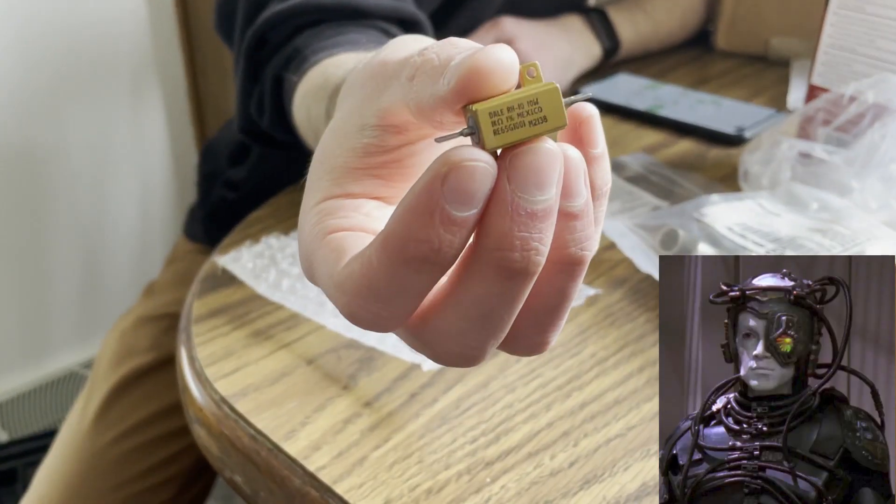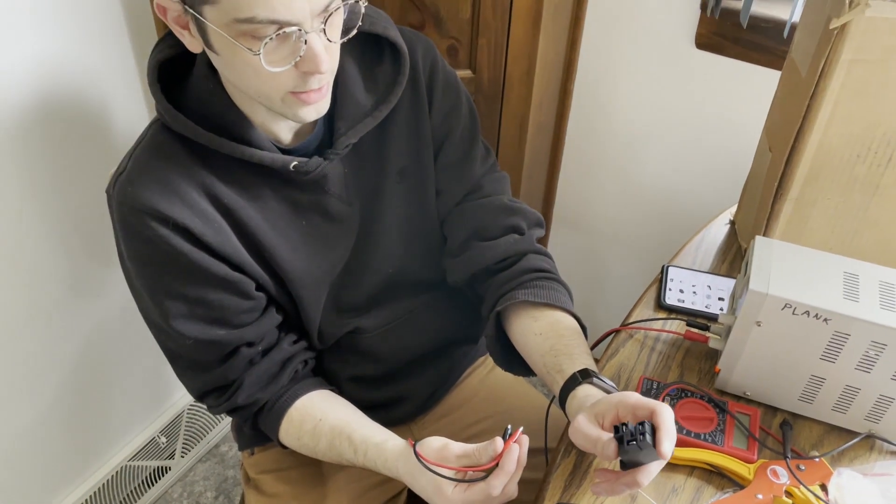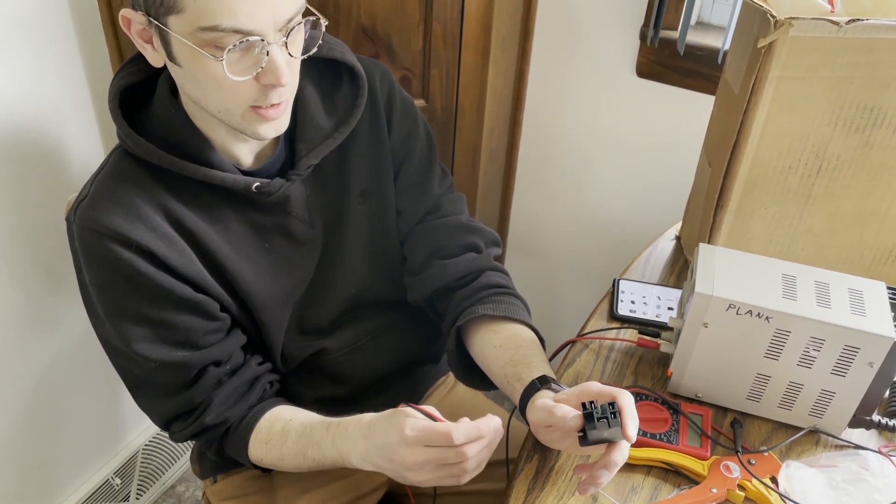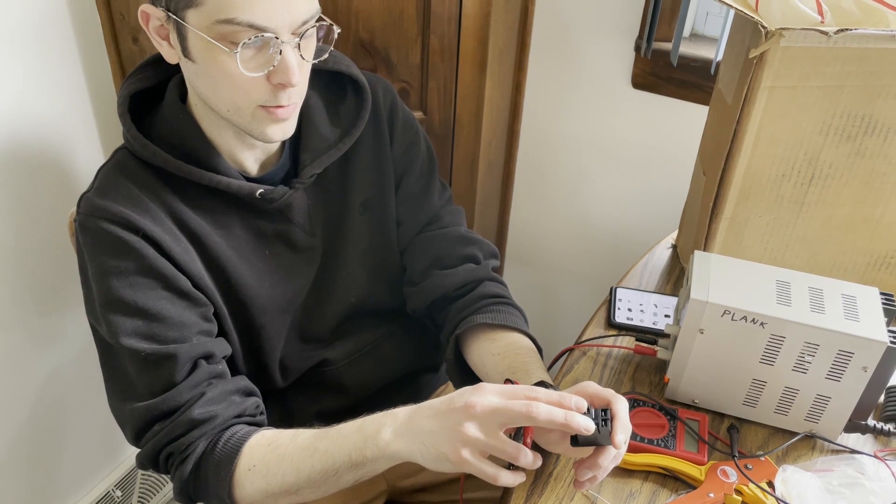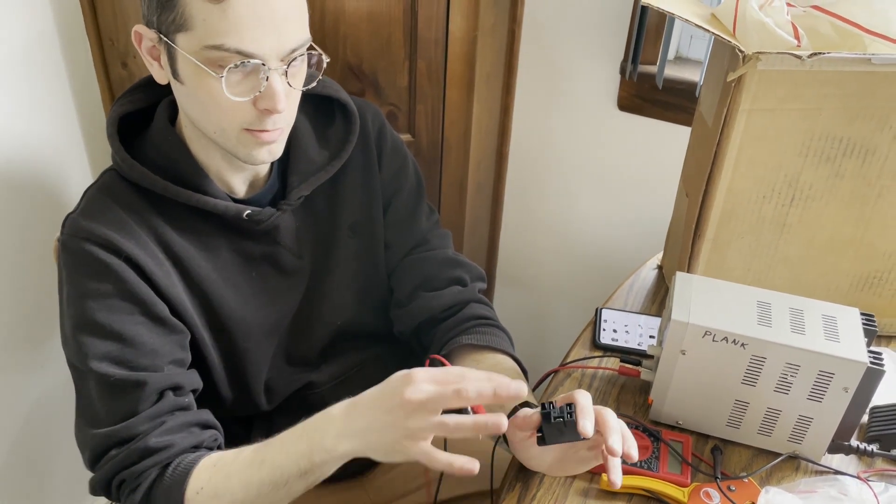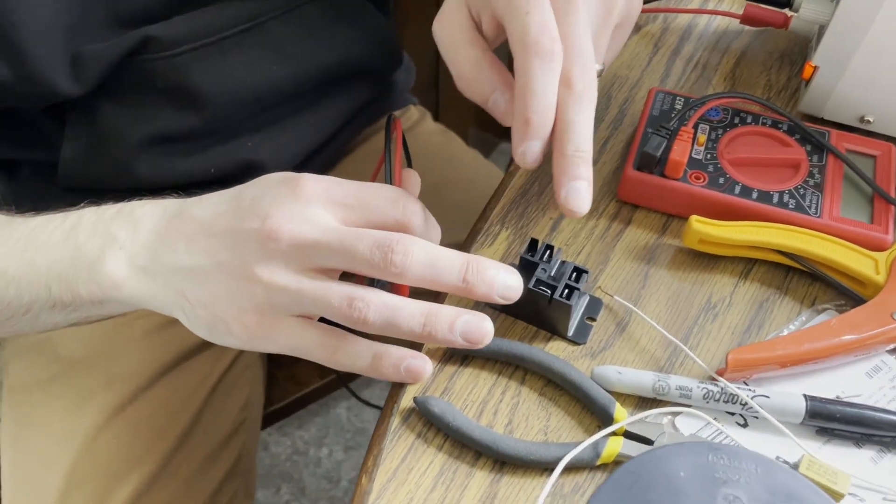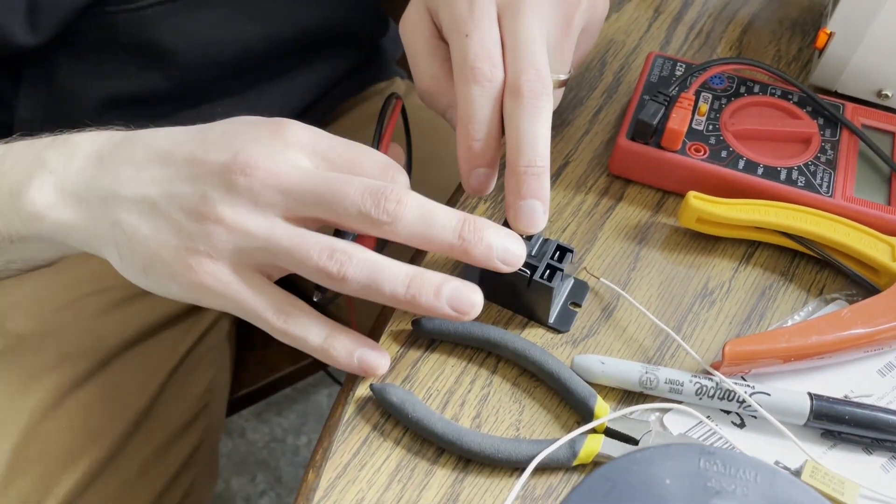The relay works kind of like a contactor. You apply power to two terminals and then it makes a connection between two other terminals that's normally not there. For a pre-charge circuit, we wire up the end that goes to the battery on one end and then to the controller on the other end. And until we energize this relay, we don't have a connection.